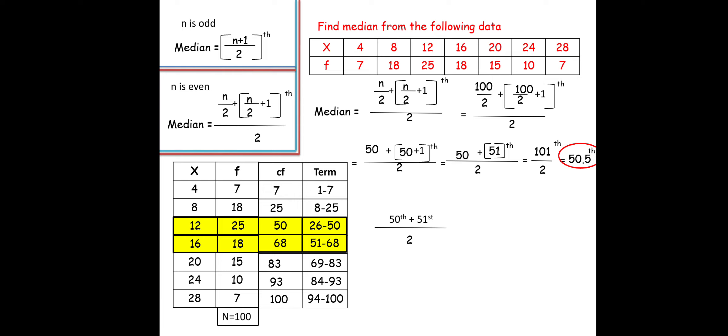For the 50th value, the X value is 12, and for the 51st value, the X value is 16. So median = (12 + 16) / 2 = 28 / 2 = 14. So 14 is the median value in this case. This is the method for calculating the median when n is odd or even.